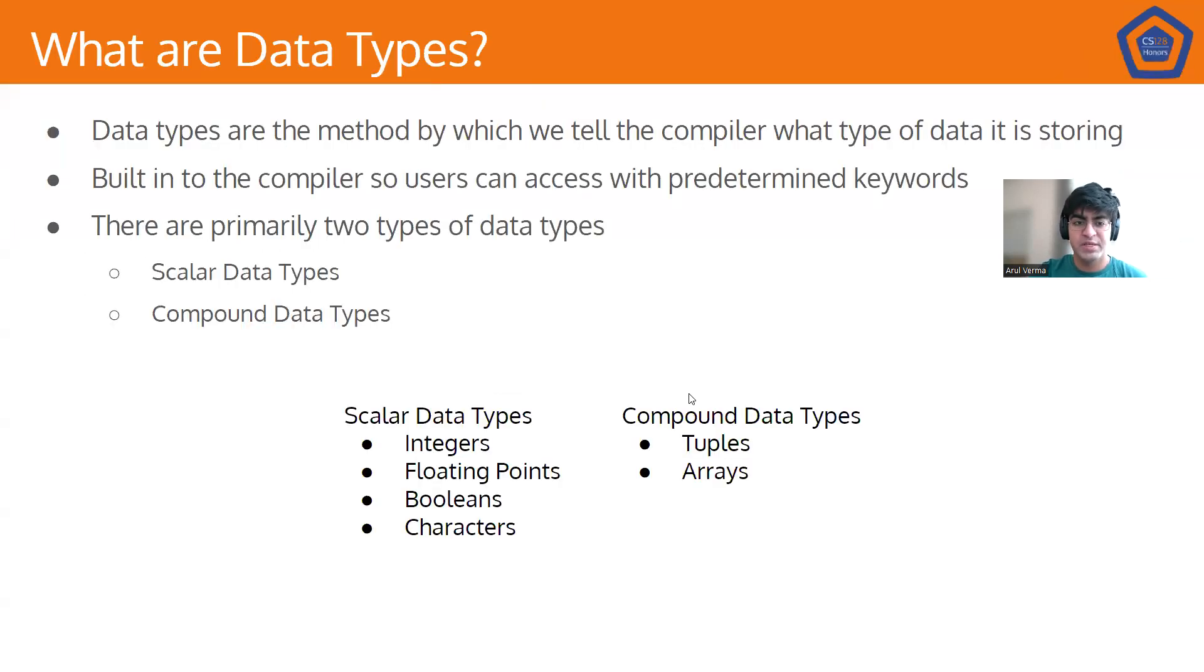So let's start by talking about what data types are. Data types are the method by which we tell the compiler what type of data it's storing. And they're built into the compiler, so users can just access them with predetermined keywords. There are two primary types of data types, scalar data types and compound data types.